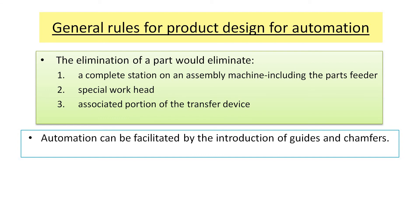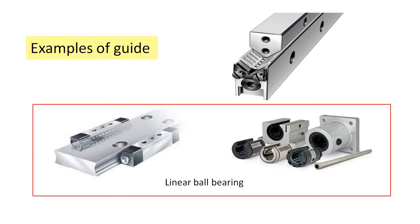In automation, the role of guides and chamfers is very important — these two things are very helpful in automation. Let's see what guides are. Here is a rod to do some particular work — you can observe that there is a groove, so the rod always receives alignment from this grooved section and keeps moving without disturbing its position. Similarly, we can use linear ball bearings to help smooth motion — in this component there are two rollers moving left to right, guided by linear ball bearings to properly achieve the required angular position.